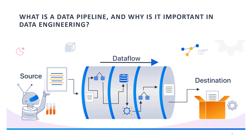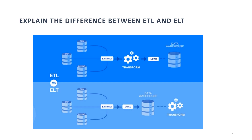What are the differences between ETL and ELT? ETL — extract, transform, load — involves extracting data from a source, transforming it into a suitable format, and then loading it into a destination. ELT — extract, load, transform — involves extracting data, loading it into a destination, and then transforming it as needed. ETL is traditionally used for data integration in batch processing scenarios, whereas ELT is gaining popularity in modern data architectures, particularly in cloud environments.